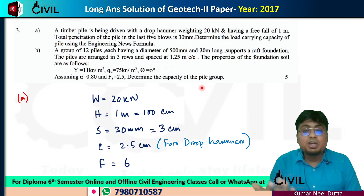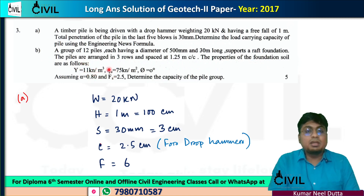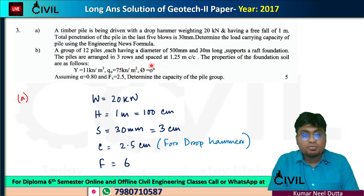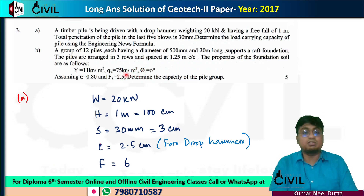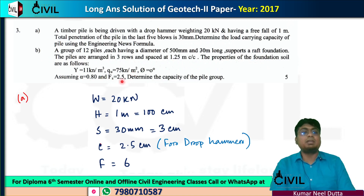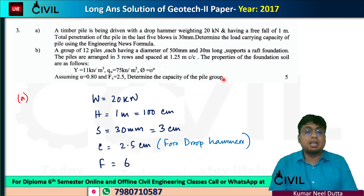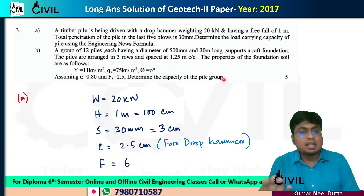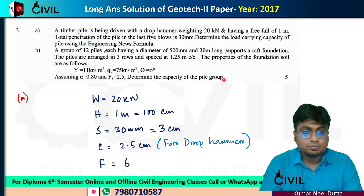Soil data: unit weight γ = 11 kN/m³, unconfined compression strength qu = 75 kN/m², so cohesion C = qu/2 = 37.5 kN/m². Since φ = 0, this is a clay soil. Alpha (adhesion factor) α = 0.80. Factor of safety is also given. We need to find the load carrying capacity of the pile group.